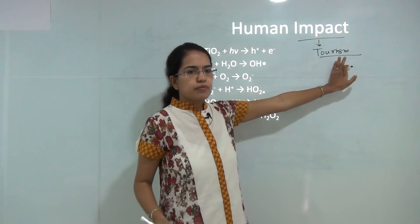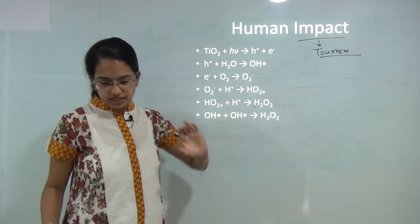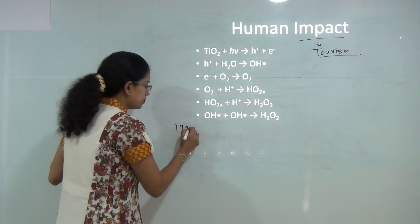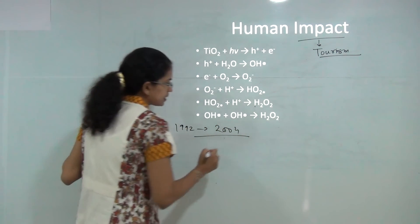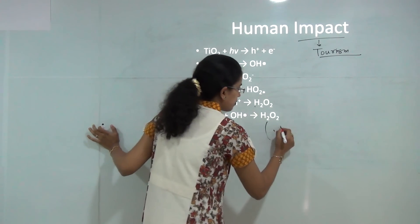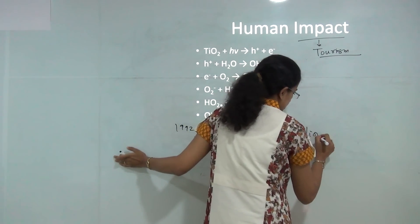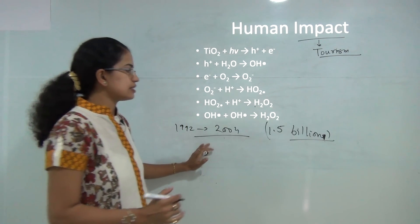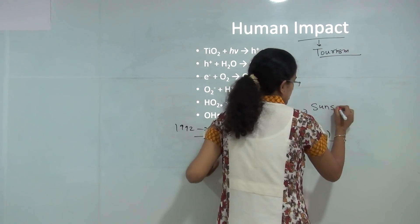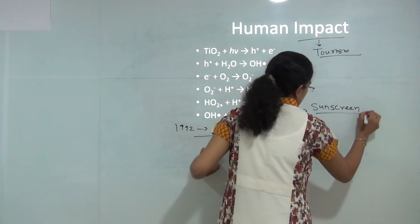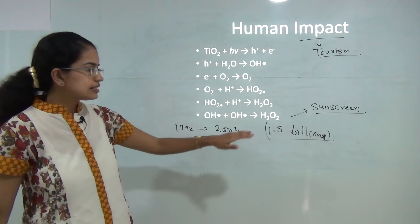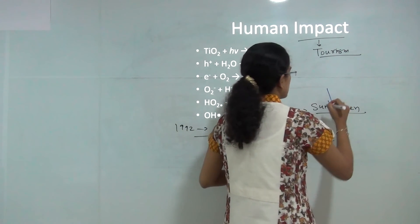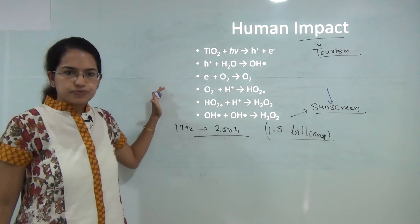and it is believed that from 1992 to 2004 there has been an increase of around 1.5 billion tourists in the region. And these tourists who are coming in this region are using sunscreens to protect from the ultraviolet rays and this sunscreen acts as a major killer for the coral population that is present.